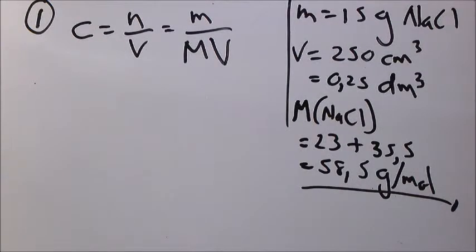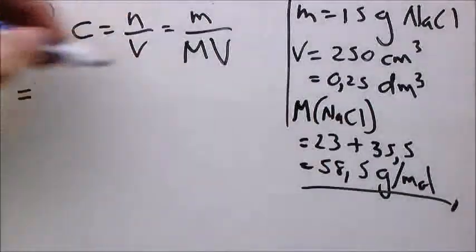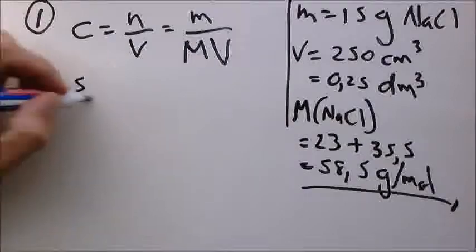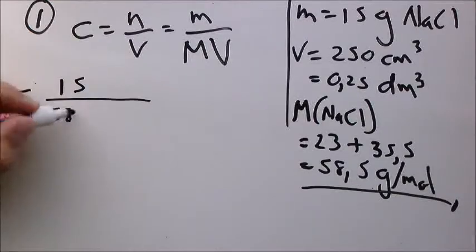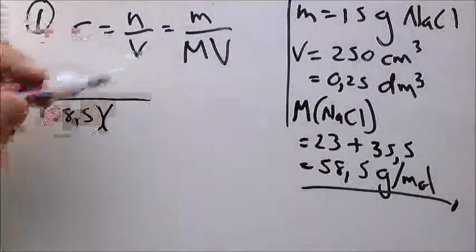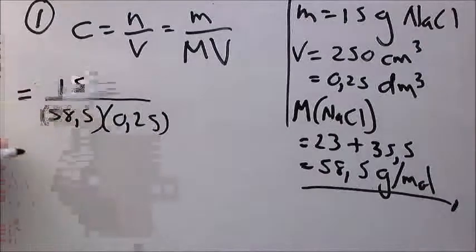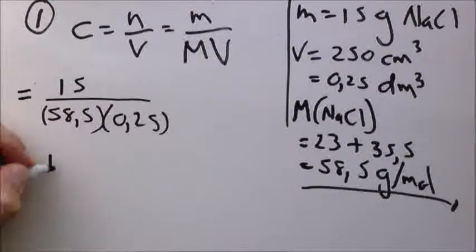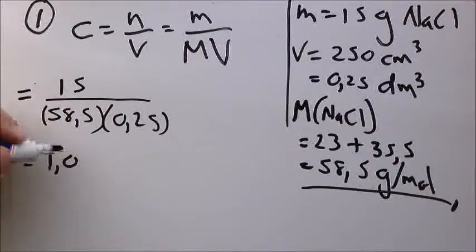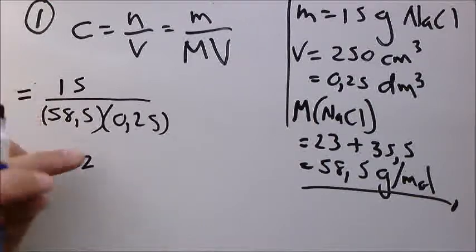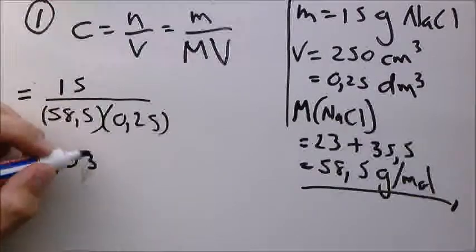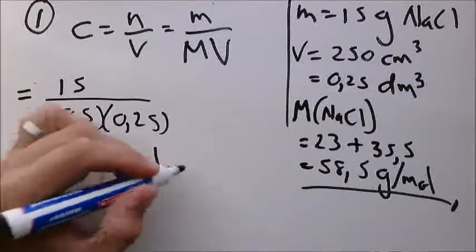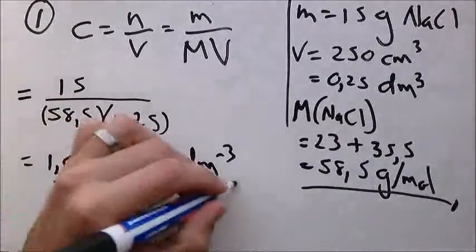Now we have what we need to do the calculation. Mass is 15, molar mass is 58.5, and volume is 0.25. The result is approximately 1.03, which rounds to 1.0 mole per cubic decimeter. This is the concentration of the solution.